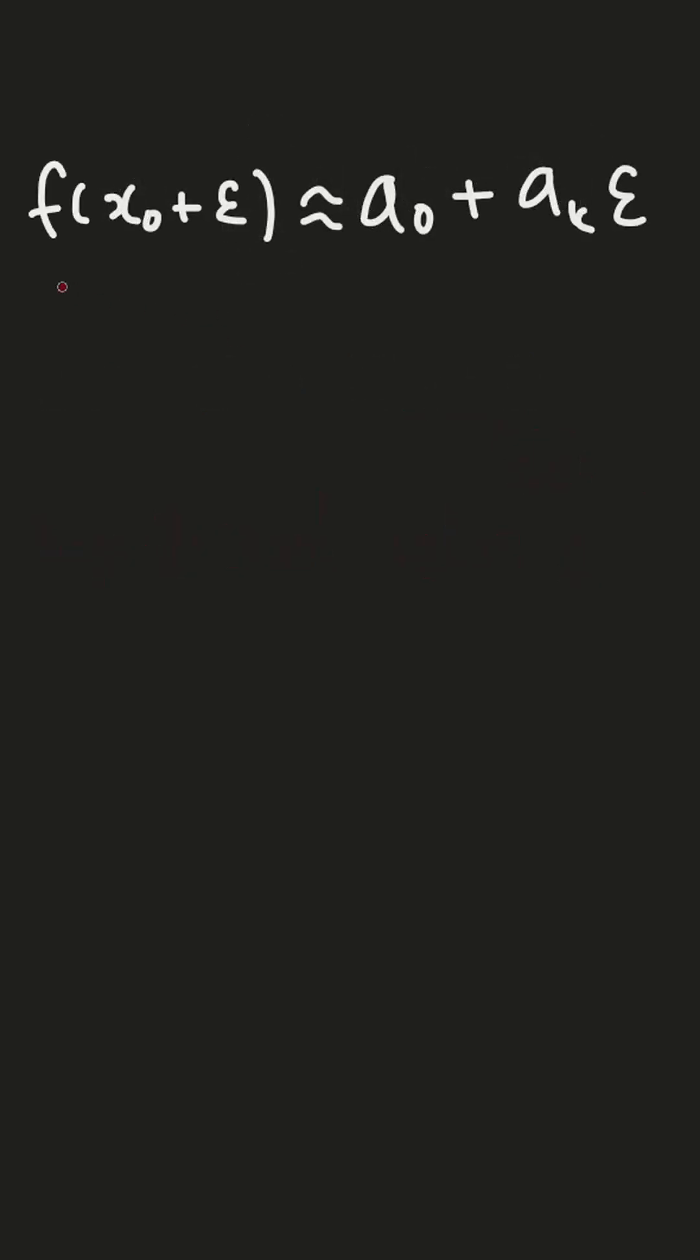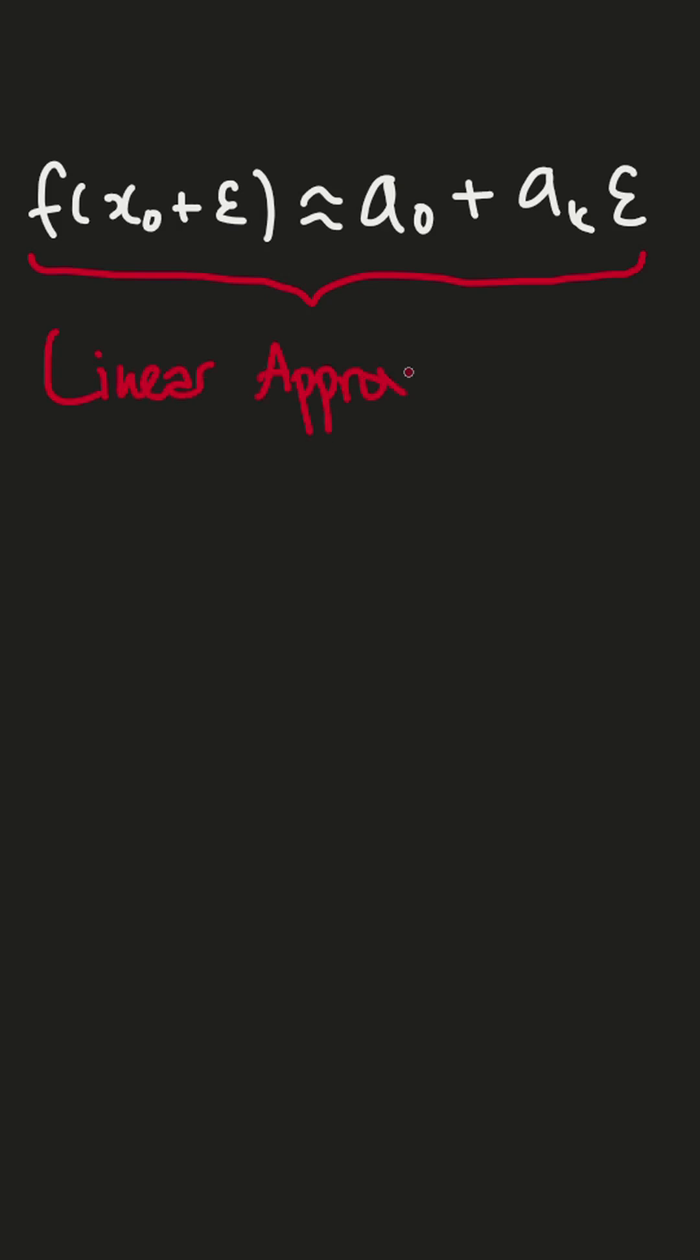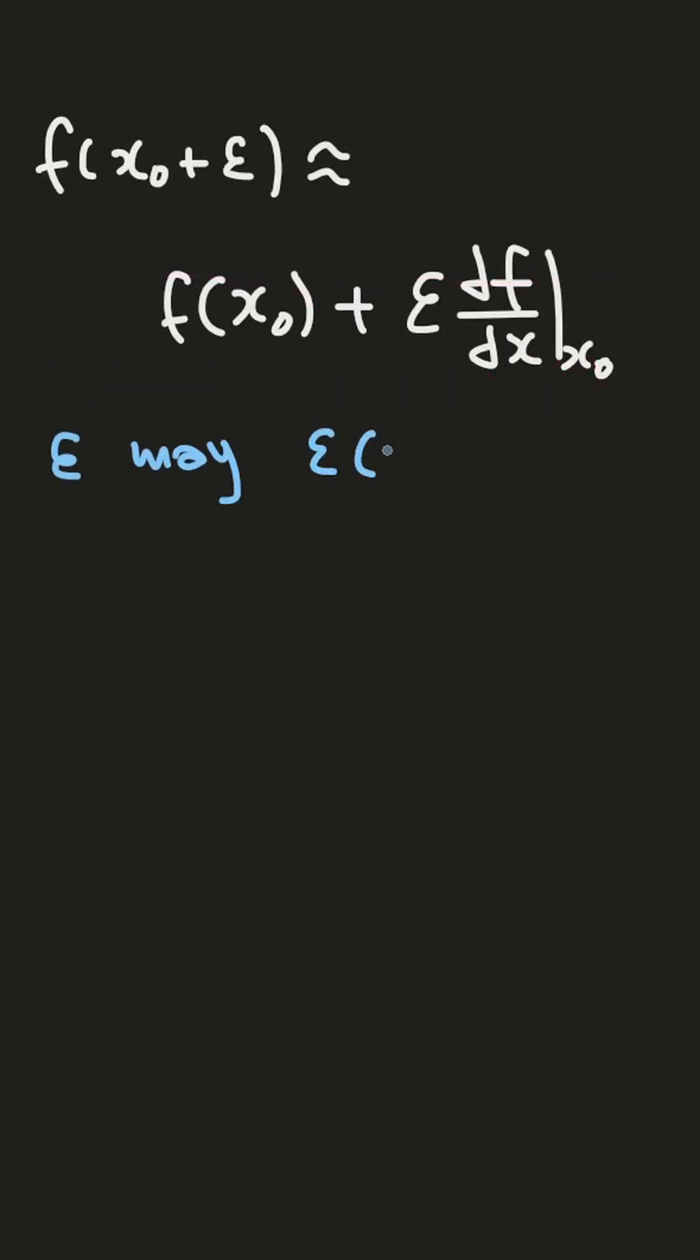and specific term by term as this, which is known as linear approximation, where epsilon may depend on x0.